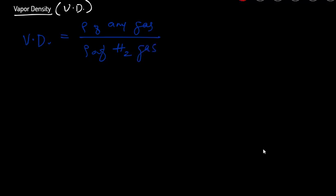You take the density of whatever gas you are trying to measure and divide it by the density of hydrogen gas. For example, if you take oxygen as a gas, the density of oxygen goes into the numerator and the density of hydrogen gas goes into the denominator.